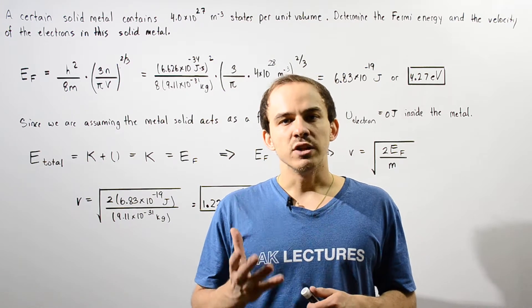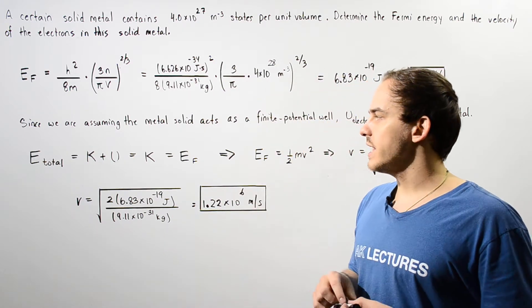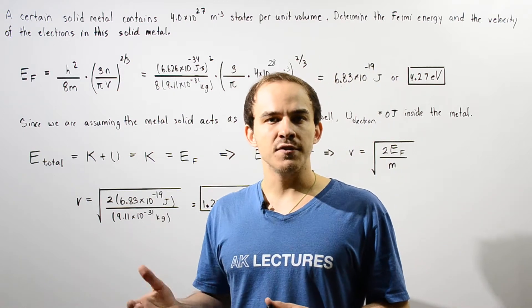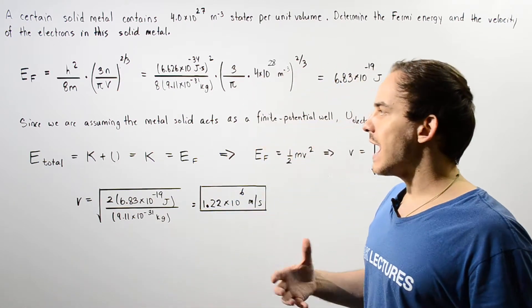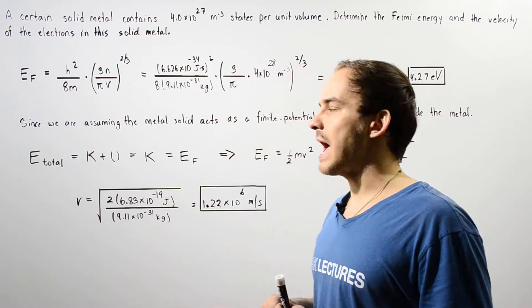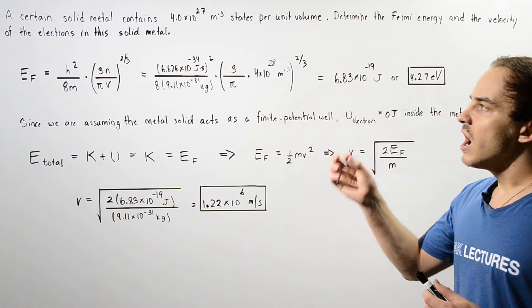Let's take a look at the following example that deals with calculating the Fermi energy of an electron in a solid metal and then using that energy to calculate the velocity of our electron.